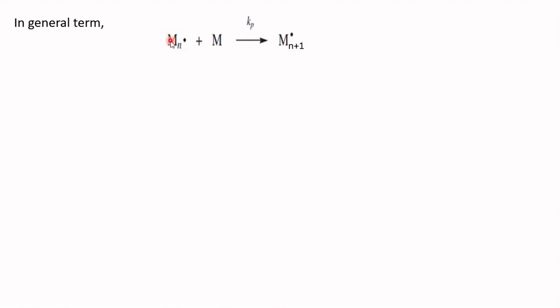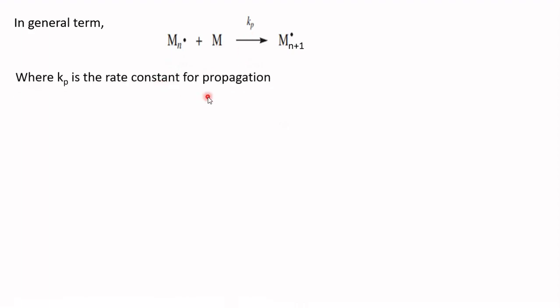In general, the propagation step can be represented as: the chain radical M_n• adds to a monomer unit to generate a new chain radical, where k_p is the rate constant for propagation. Monomer disappears by both the initiation reaction and the propagation reactions.